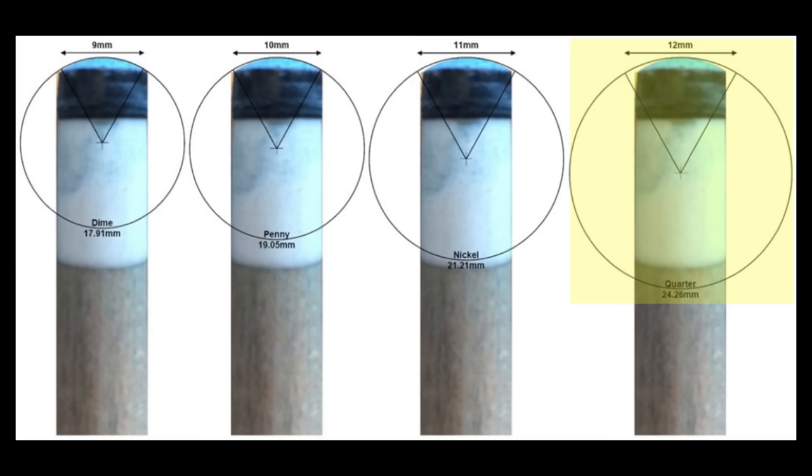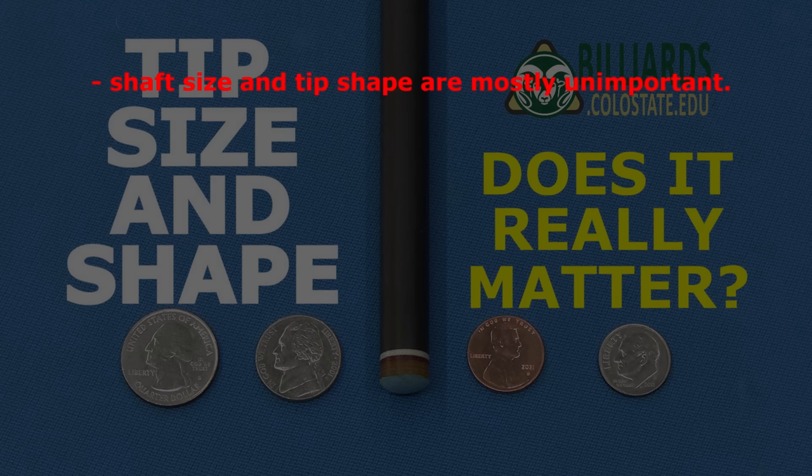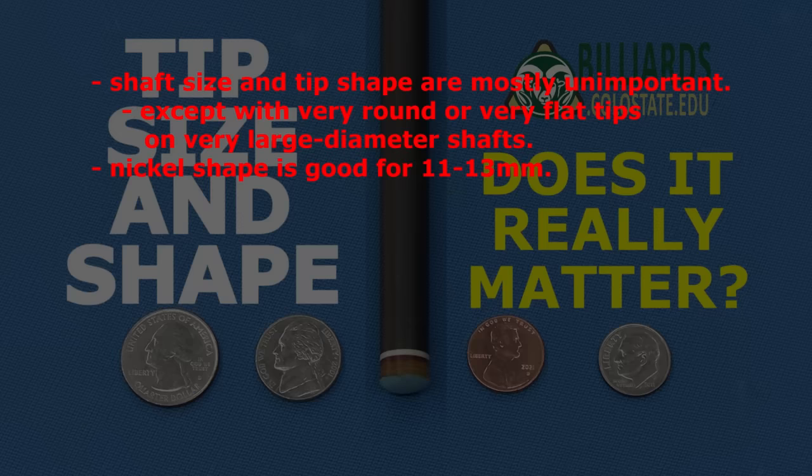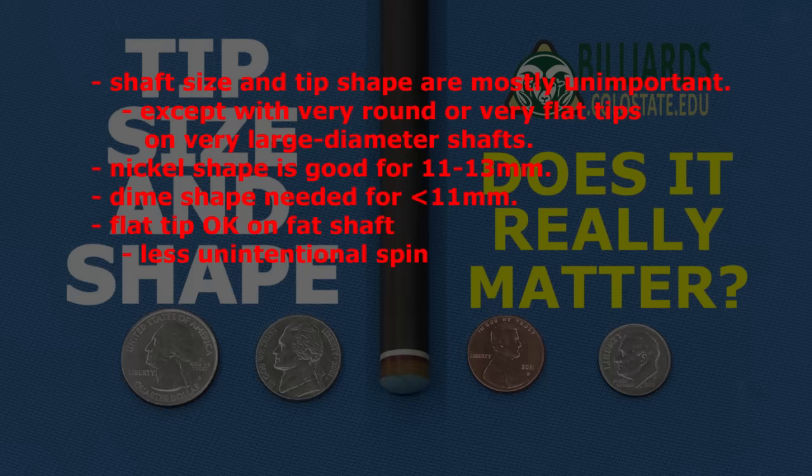The main point of this video is that the shaft size and tip shape really don't make much difference, except at the extremes of very round or very flat tips on very large diameter shafts. A nickel shaped tip on any common shaft size between 11 and 13 millimeters is acceptable. Although if you have a very small diameter shaft less than 11 millimeters, the tip should be rounded to a dime shape. The tip on a large diameter shaft can be flatter, which will limit unintentional spin, but if the shaft is too large or if the tip is too flat, contact with the edge of the tip will be more likely and the amount of backspin possible will be limited.